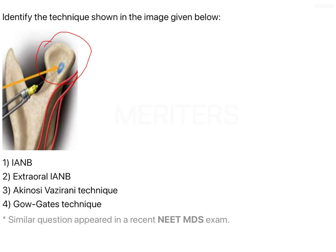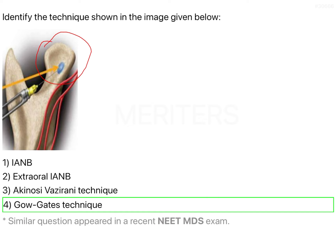Coming back to the question — because the injection is at a higher level, at the condyle, the answer is the Gaugage technique. The conventional IANB is the standard technique. The extra oral IANB can be given by penetrating the needle below the body of the mandible or posterior to the auricle, used in patients with trismus or those who are unconscious. The Vazirani-Akinosi technique is for patients with trismus, using the occlusal line as the landmark.